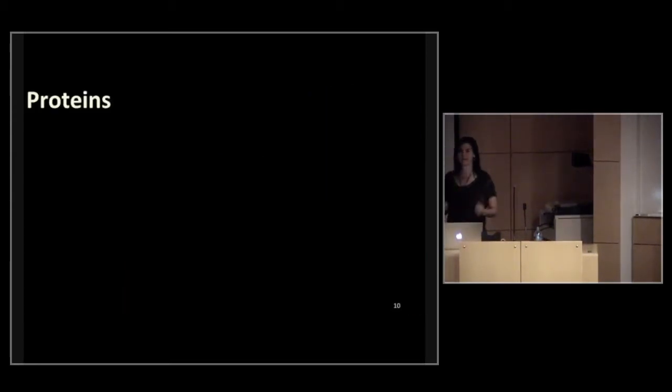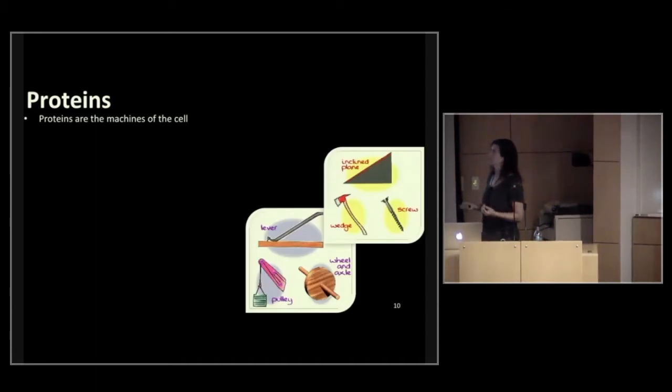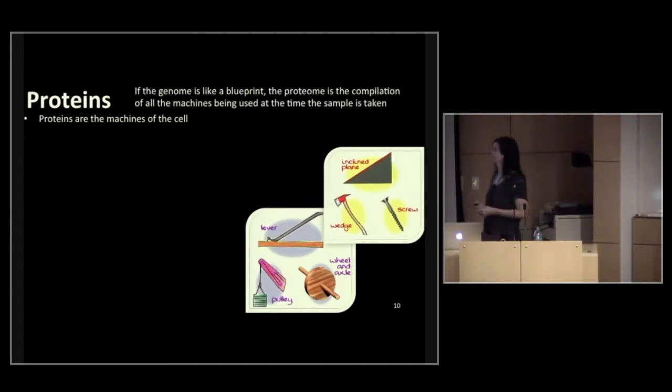Proteins are what I study. I'm a protein mass spectrometry group, and I work with Mike McCoss who was up here earlier. Proteins are considered the machines of a cell. Over here I have an illustration of some very simple machines. We have an inclined plane, a wedge, a lever, a pulley system. We have proteins that do similar one-function type things, but we can also combine them to be more sophisticated. So if the genome is like the blueprint, the proteome, or the entire set of proteins, is going to be the compilation of all the machines that are being used at the time that sample is taken.